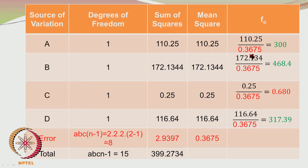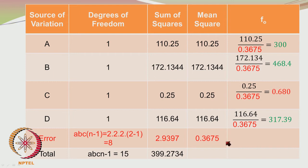You have 110.25 divided by 0.3675 which is approximately 300. Similarly, the next sum of squares for B would be 172.1344, and dividing by the mean square error 0.3675 gives 468.4. For C it would be 0.25 divided by 1, which is 0.25, divided by the mean square error 0.3675, giving 0.68. Similarly you find it for D.